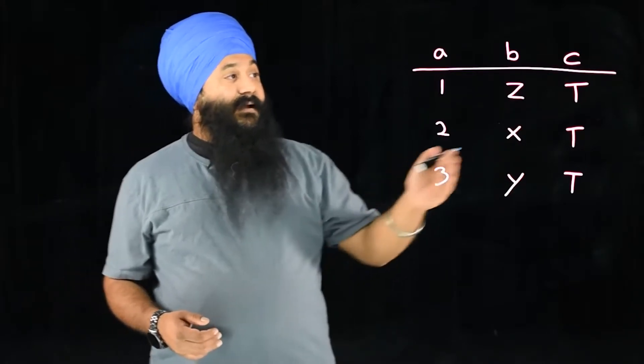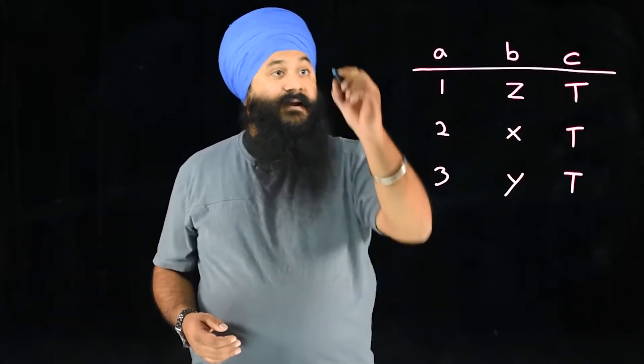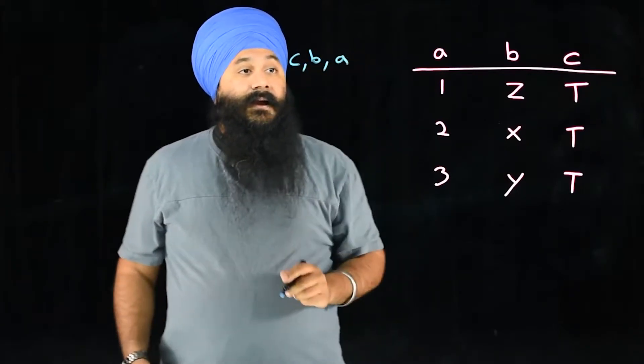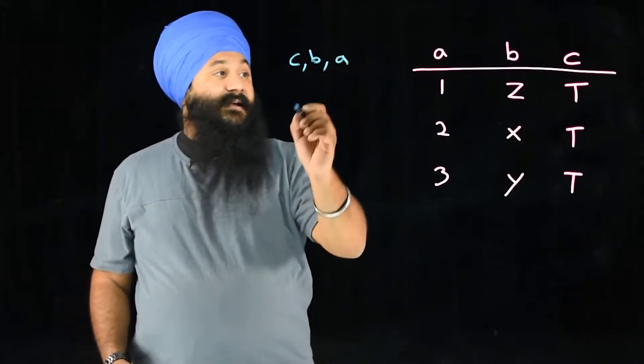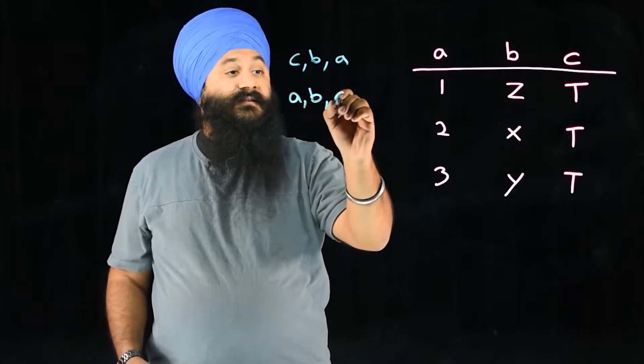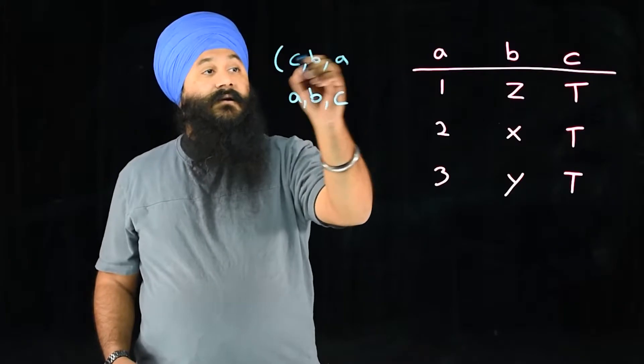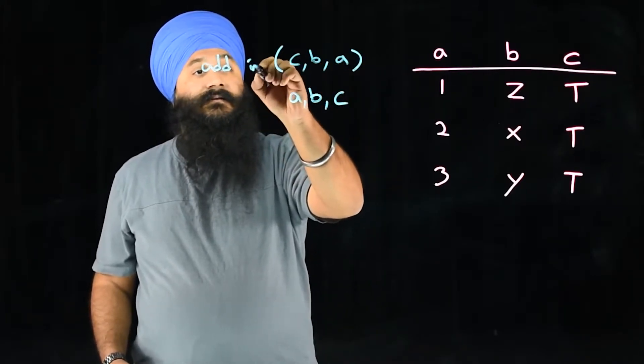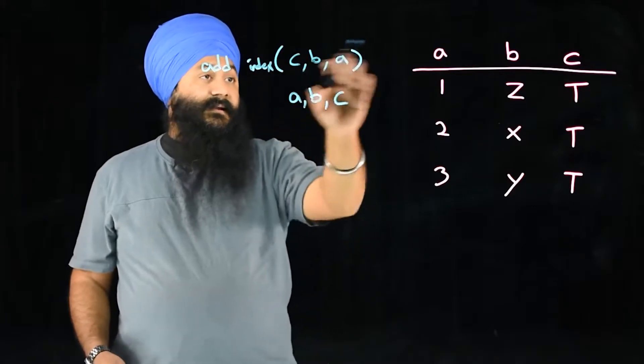So if you were to create an index called C, B, A, it wouldn't be as useful as for example doing A, B, C. And again this is part of your index so you would say add index and that index is there.